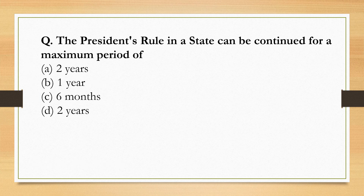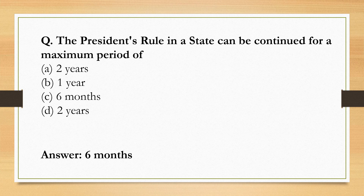The President's rule in a state can initially continue for a maximum period of 6 months, but it can be extended up to 3 years. After the 44th Amendment, extension beyond 6 months is allowed only in two conditions: first, when a national emergency is imposed in the country; and second, when the Election Commission cannot conduct elections.